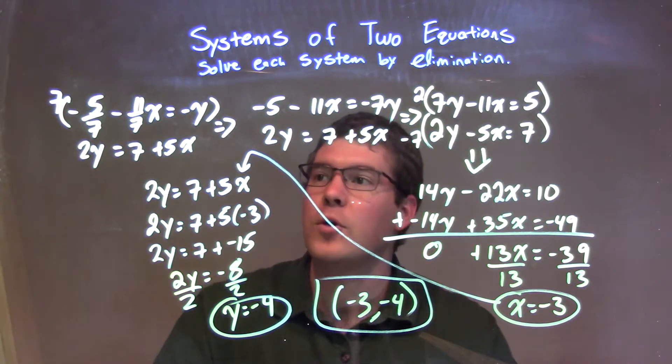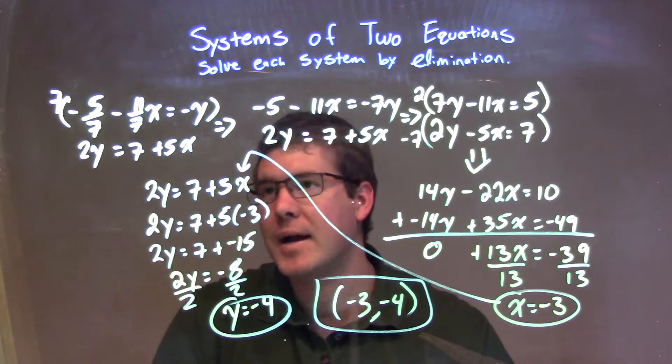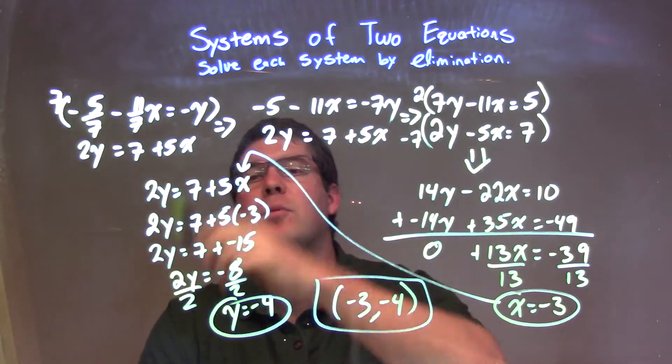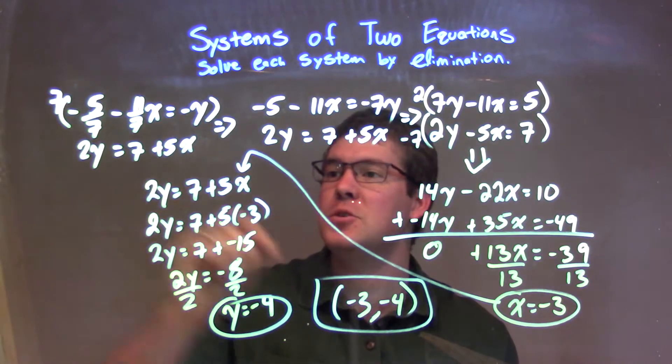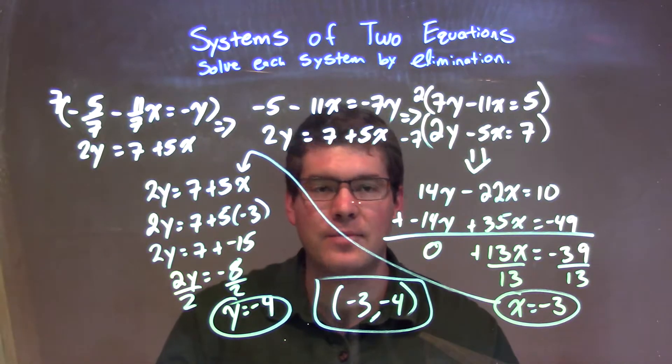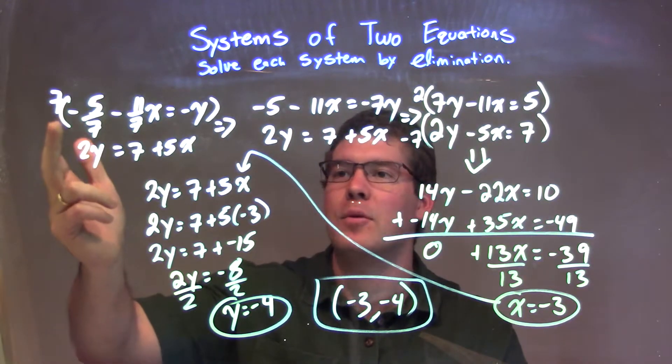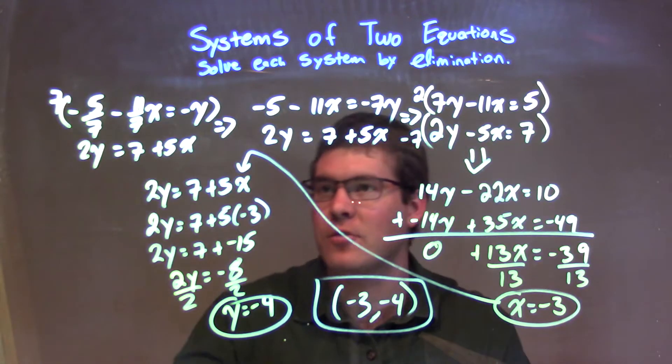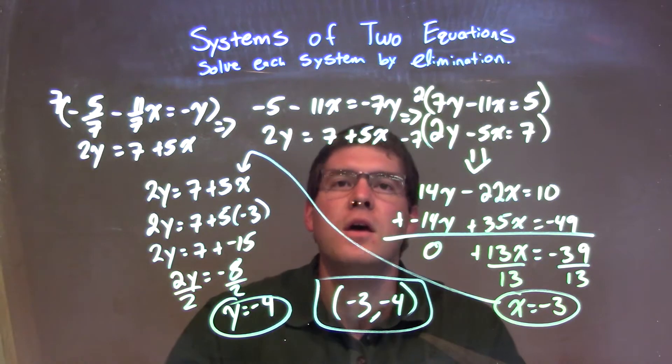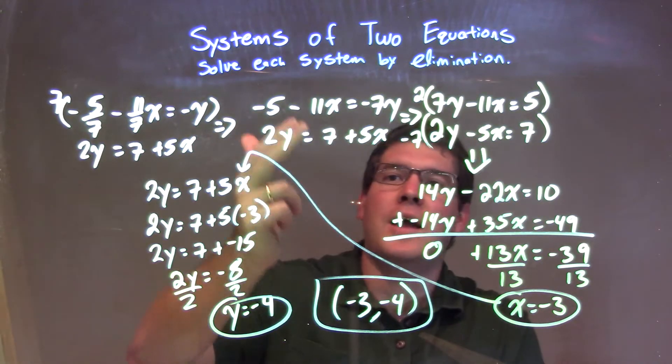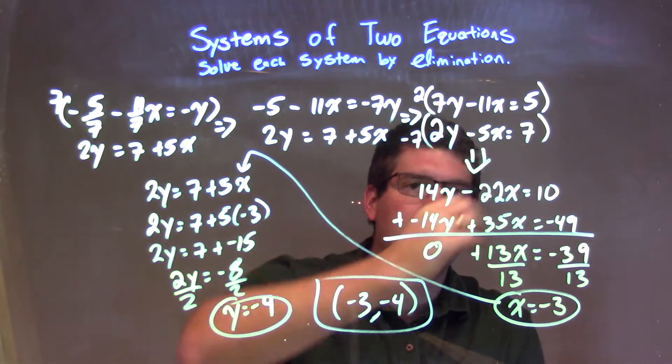Let's recap. We're given our two equations: negative 5 sevenths minus 11 sevenths x equals negative y, and 2y equals 7 plus 5x. First thing I did is multiply the top equation by 7 to eliminate the fraction across the board. After that, I rearranged. I had my variables first, then my number.